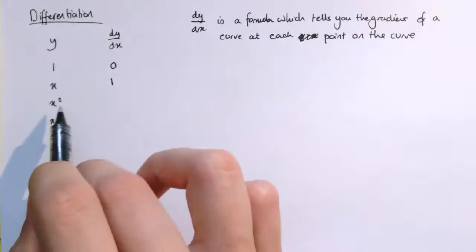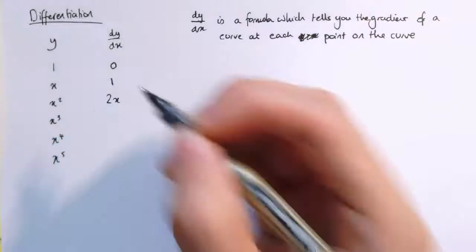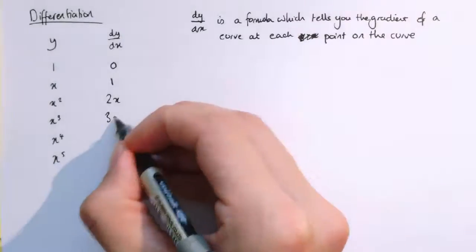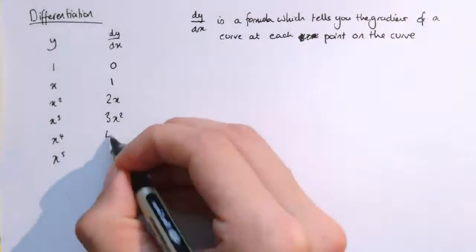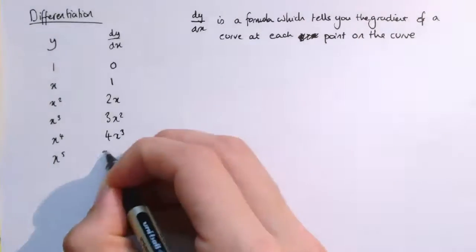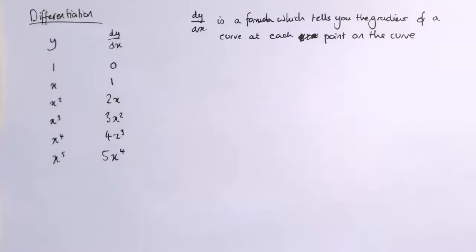For other things, it's not as simple as that. So x squared, dy/dx is 2x. x cubed, it's 3x squared. x to the 4, it's 4x cubed. x to the 5, it's 5x to the 4.